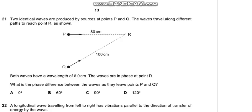Question number 21 says that two identical waves are produced by sources at points P and Q. The waves travel along different paths to reach point R as shown. Both waves have a wavelength of 6 cm. If the waves are in phase at point R, what is the phase difference between the waves as they leave points P and Q? The first thing we must know is that the phase difference equals the path difference divided by lambda multiplied by 360.